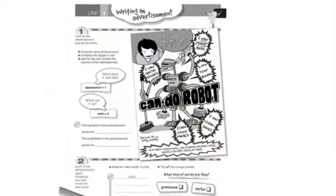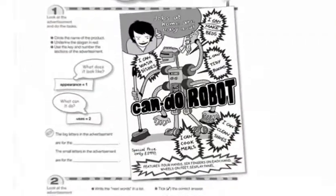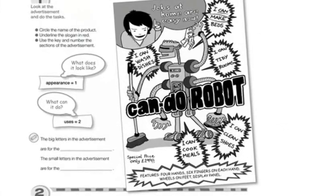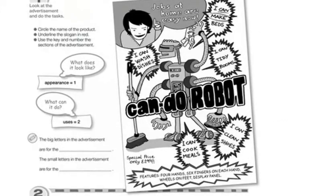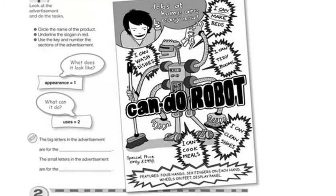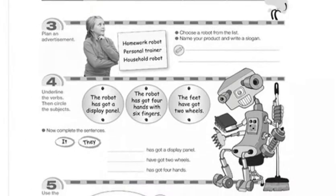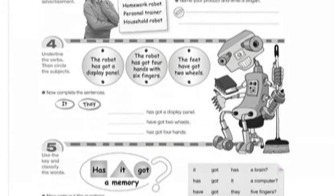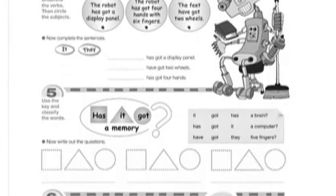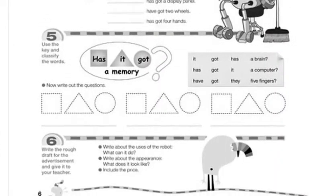Look at this example. Here is the model text — an advertisement. The key grammar is contained in the text. On this page, the students plan their writing and analyse the grammar.